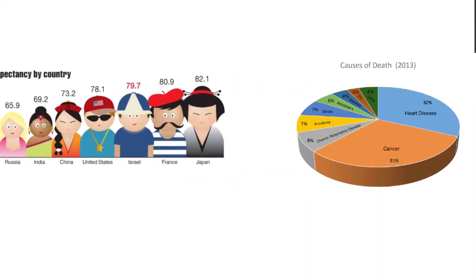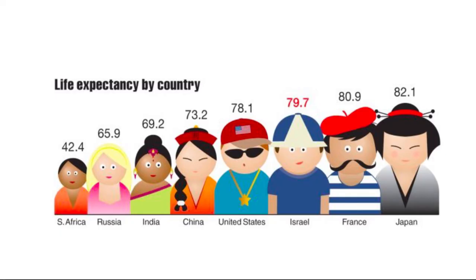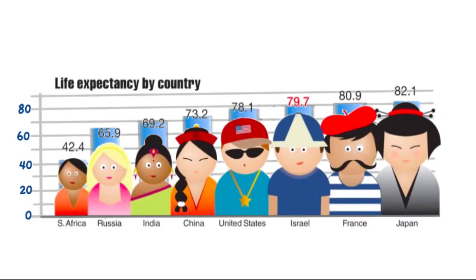Let's take a look at another graph. Continuing on the topic of health data, we have a picture graph comparing the average life expectancy among different countries. It's basically a bar graph with colorful pictures to replace the boring bars. But the pictures make it hard to see the height of the people. Look at the beret that the Frenchman is wearing — where is the top of him supposed to be? Let's add a vertical axis and a bar graph to get a better sense of the scale. Some of the heights are a little bit off, but that isn't our biggest problem here.